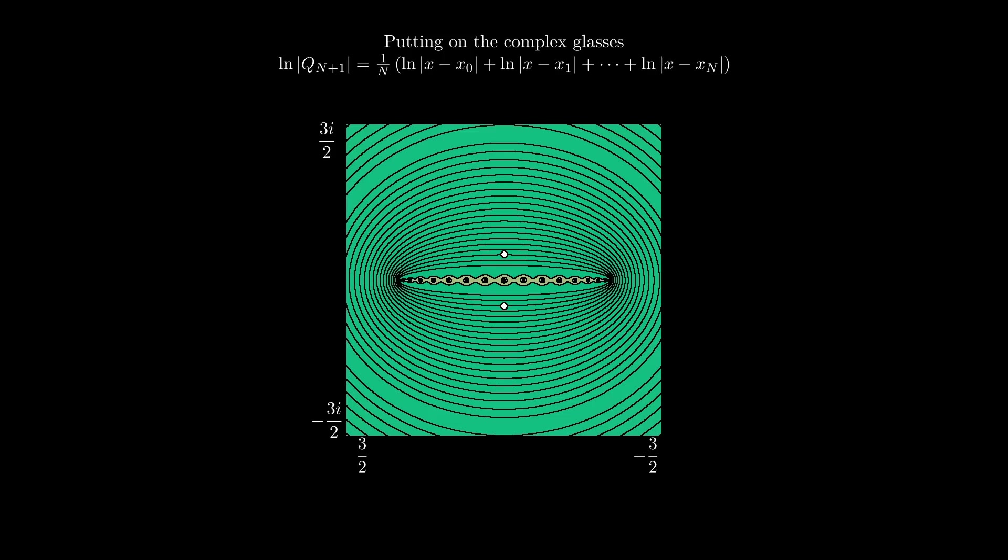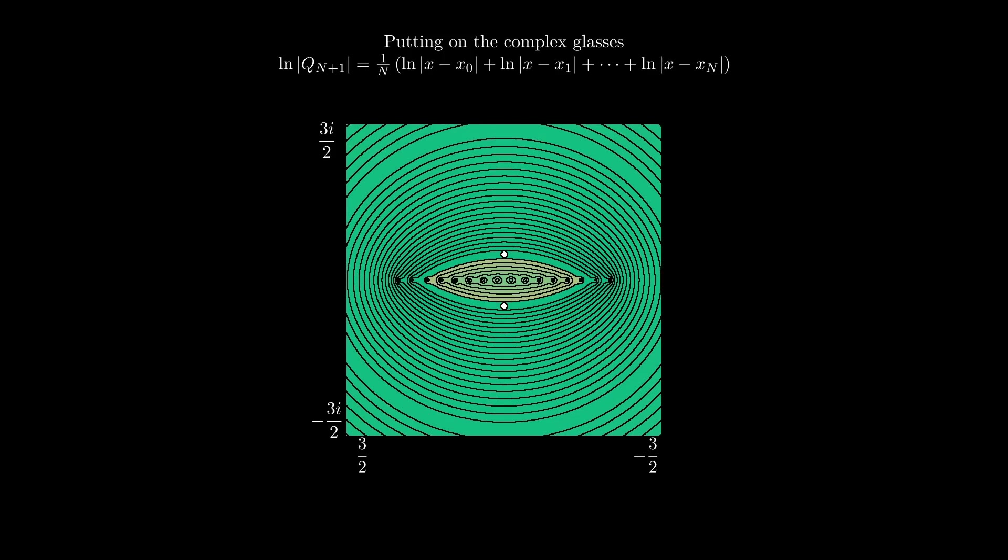On the other hand, for equally spaced nodes, the contours are wider and some don't contain all the interpolation nodes. We now show the final result without proof.